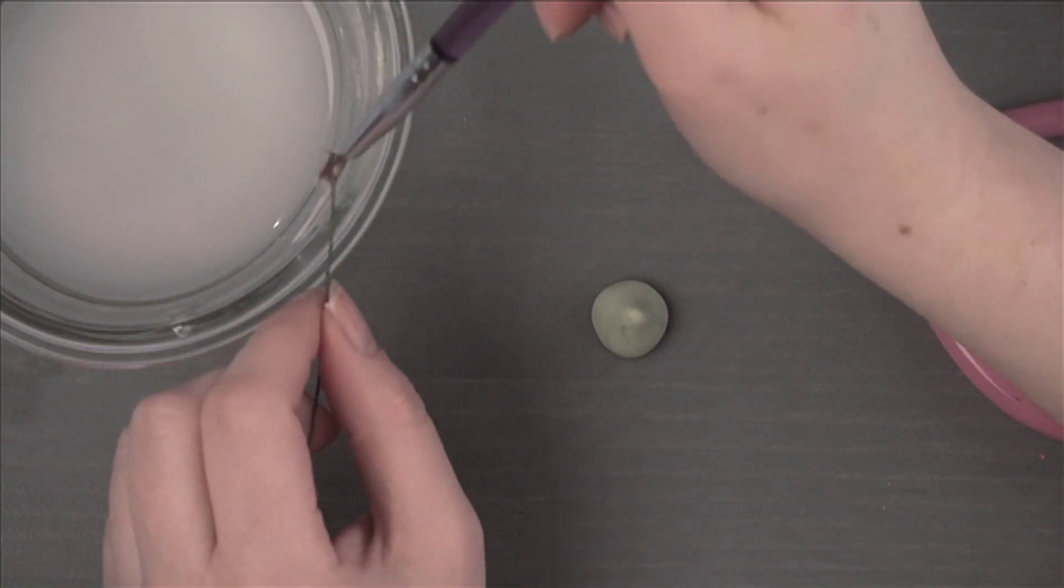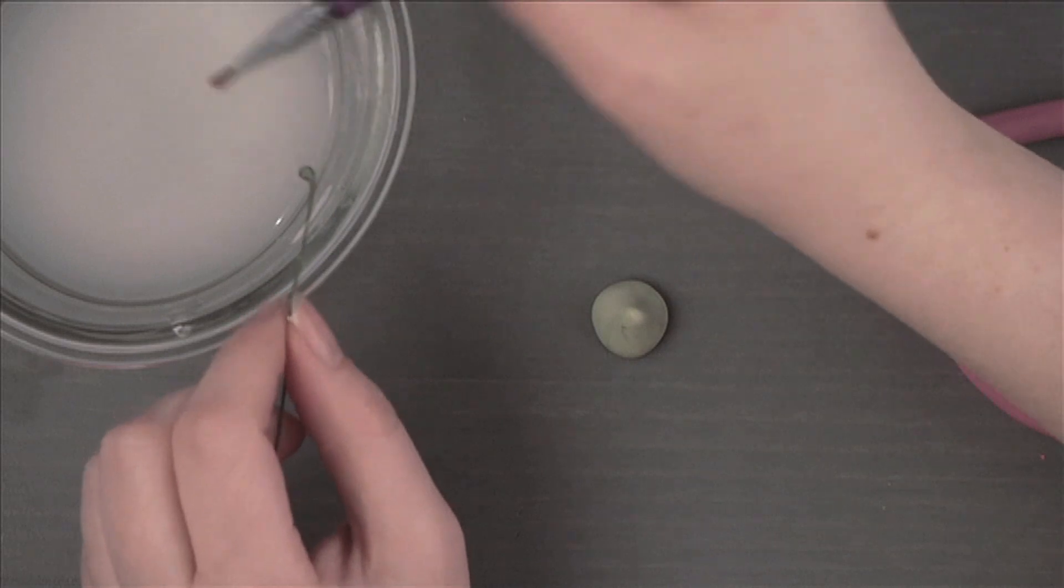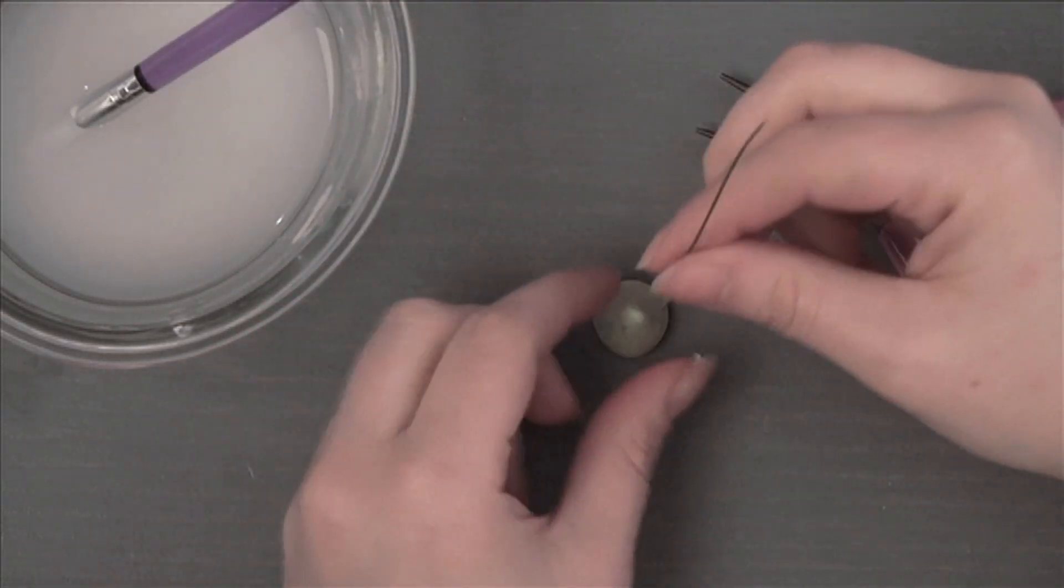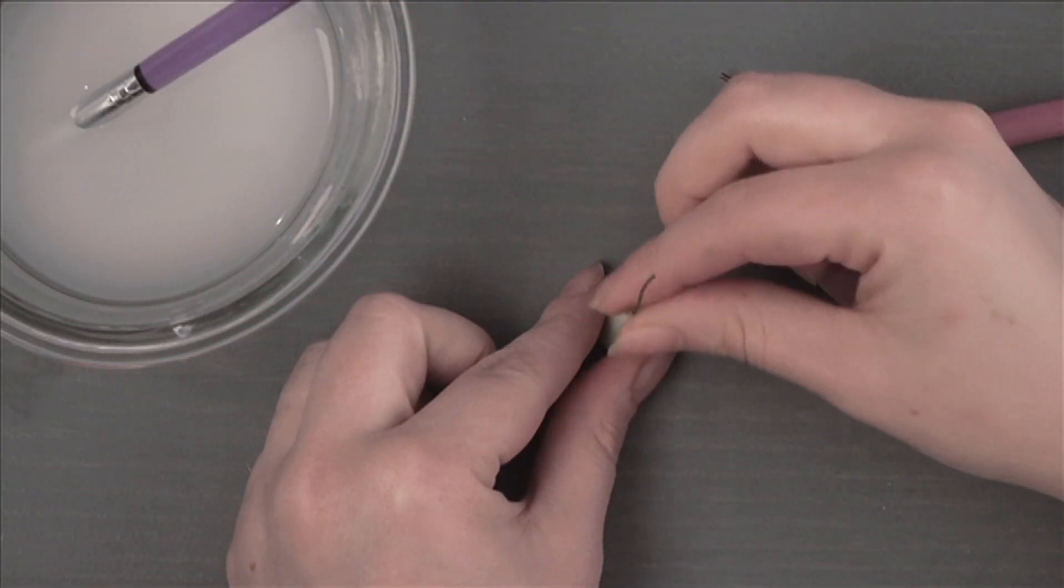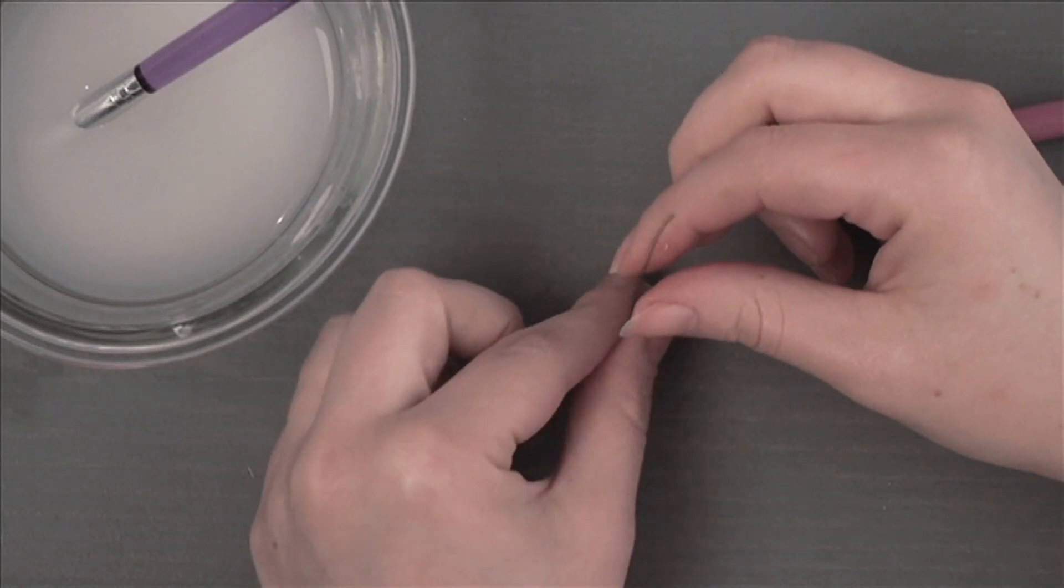Brush the hook with gum glue adhesive. Insert the straight end into the cone shape at the widest end, pushing the wire through until the hooked end is about halfway through the cone.